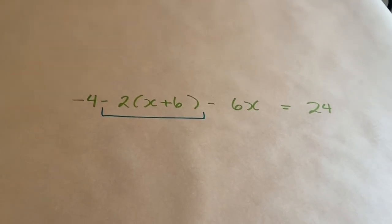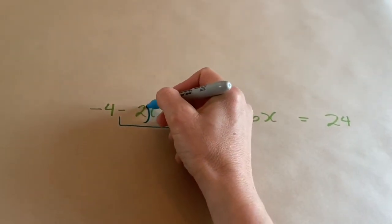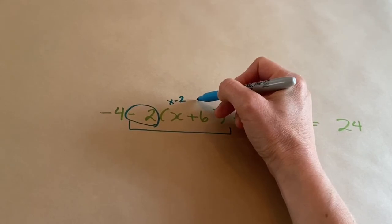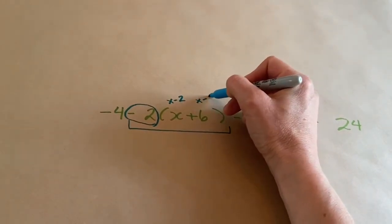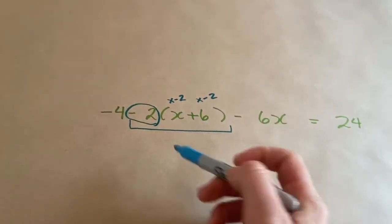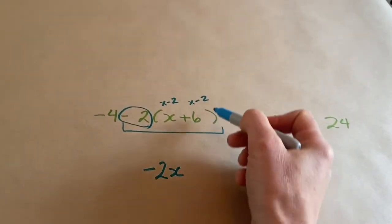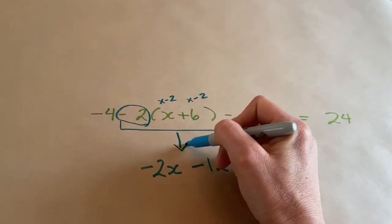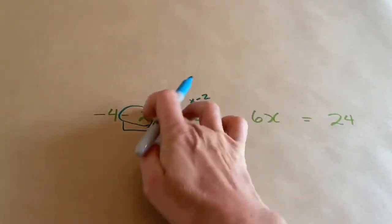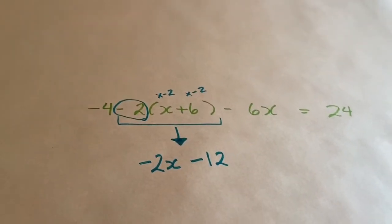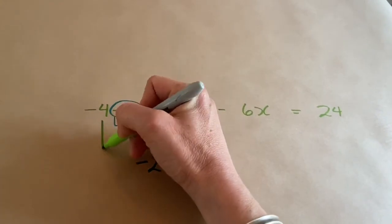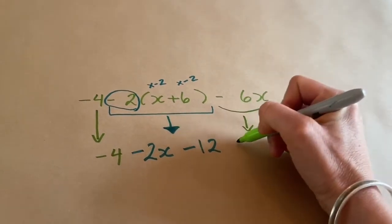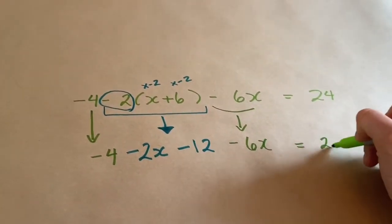When you have brackets, that's what you always want to do first. So you need to realize that in front of the bracket it's not just 2, it's minus 2. That means I need to multiply the x by minus 2 and the 6 by minus 2. So I have minus 2 times x gives me minus 2x, and minus 2 times 6 gives me minus 12. So I have simplified this part here.